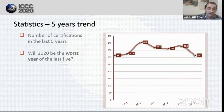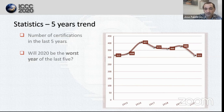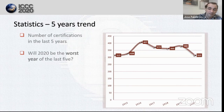With those numbers on the table, and seeing that they are very similar for this year to those of 2015, we might be able to say that 2020 will probably be the worst year in the last five.